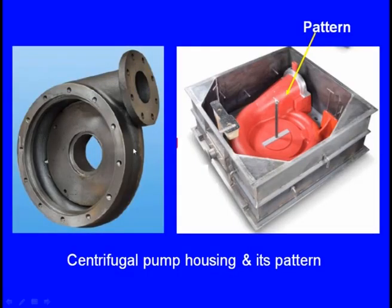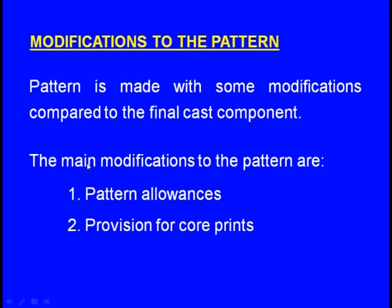Now let us see how the pattern looks like. Say this is the centrifugal pump to be made by the casting process — the pattern looks like this. The pattern is made with some modifications compared to the final cast component. The main modifications to the pattern are pattern allowances and provisions for core prints. Allowances means some increment or decrement to the dimension, whereas the second modification is the provision for the core prints.